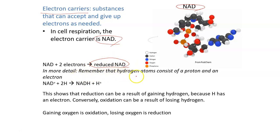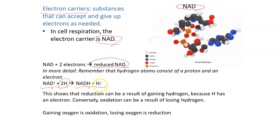Remember that hydrogen atoms consist of a proton and an electron. So if NAD receives the electron, it becomes reduced NAD. The form of NAD with the received electron is NADH — that is, NAD⁺ receives 2H and becomes NADH, meaning the electron was received by NAD from the protons.